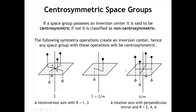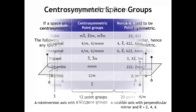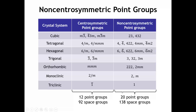The other combination of symmetry elements that creates an inversion center is a rotation axis with a perpendicular mirror, if the rotation axis is an even number. A four-fold rotation axis with a perpendicular mirror creates an inversion point where the axis and mirror plane intersect. When we sort all space groups, we divide our 32 crystallographic point groups into 12 centrosymmetric and 20 non-centrosymmetric point groups, as shown in the table. Both types appear in every crystal system.